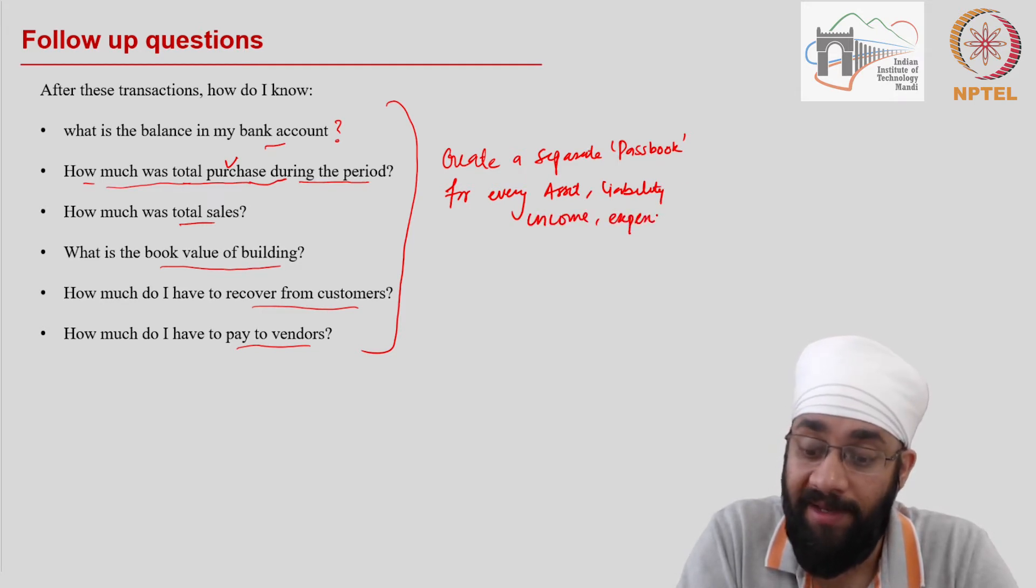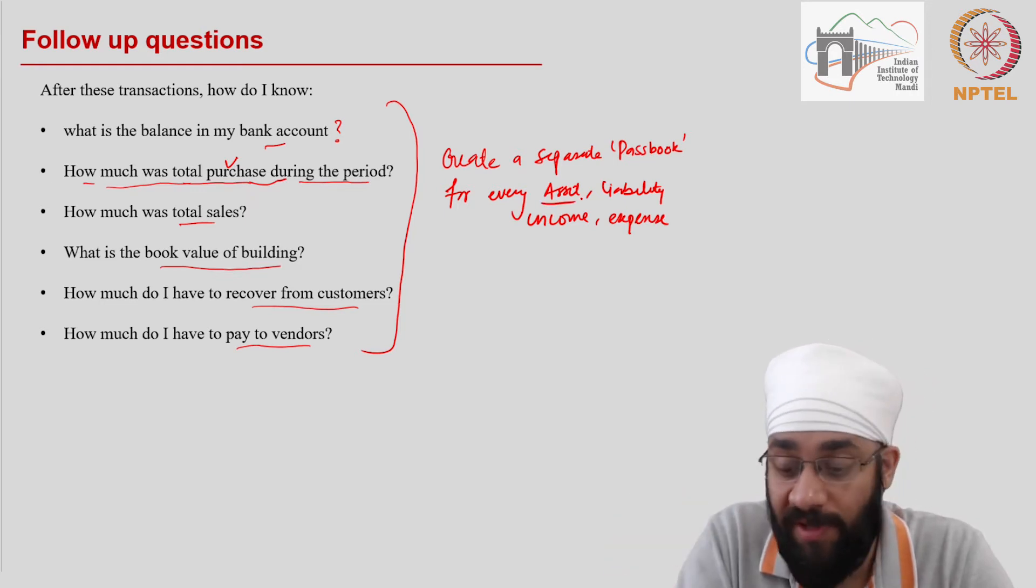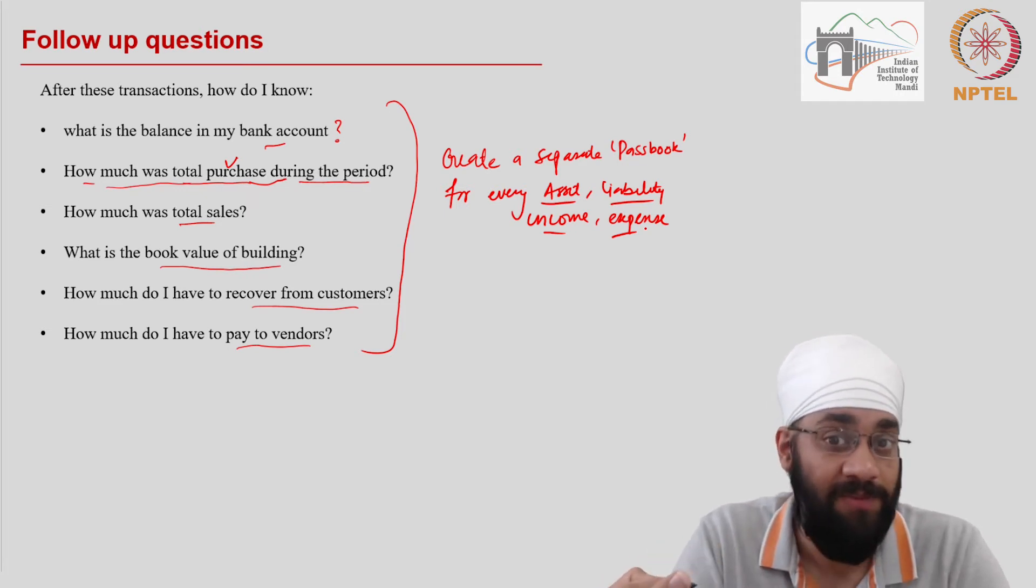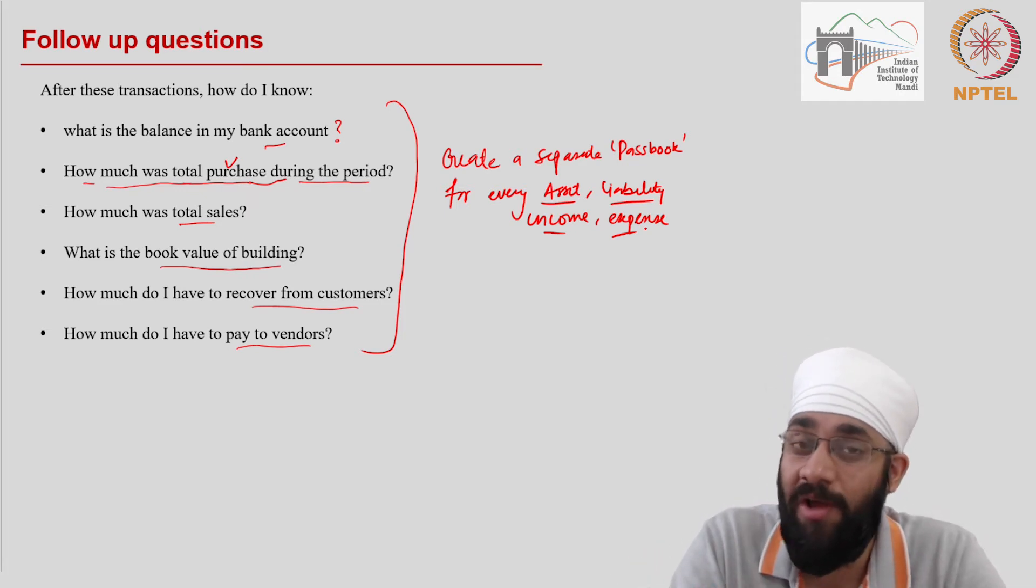Now understand that there can be 10 types of assets, 20 types of liabilities, income and expenses. So you will need to maintain many passbooks but that is going to come handy as you move forward.